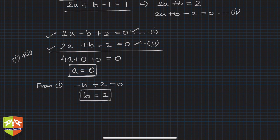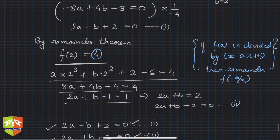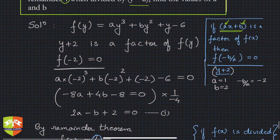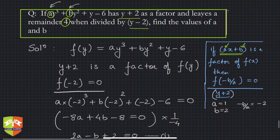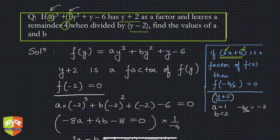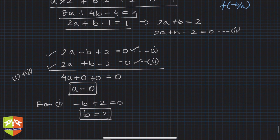So the values are a = 0 and b = 2. The underlying approach was: apply the factor theorem to get one equation, apply the remainder theorem to get a second equation, then solve the two linear equations simultaneously. You can use addition/subtraction or the substitution method — which is covered in our course on linear equations in two variables.